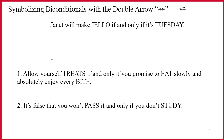Before we start the actual sentences, let's look at a sample sentence: 'Janet will make jello if and only if it's Tuesday.' We see 'if and only if' here, so we know we're going to have a double arrow. The sentences on either side are simply 'Janet makes jello' and 'it's Tuesday,' so the symbolization is j double arrow t.